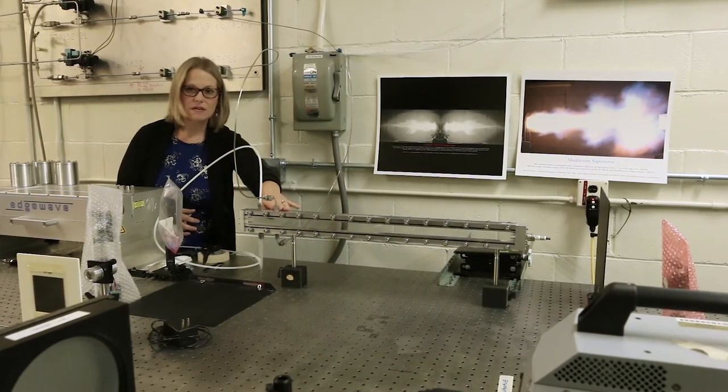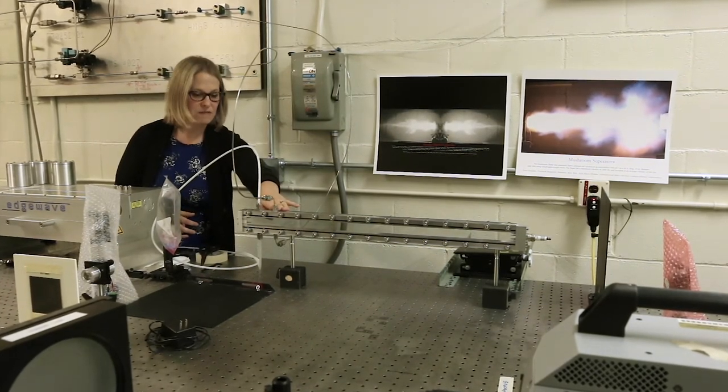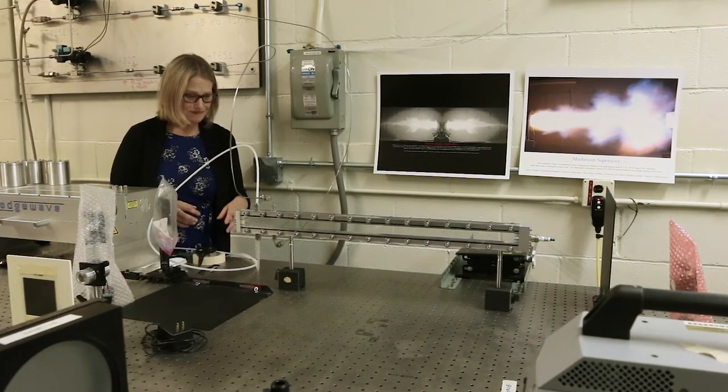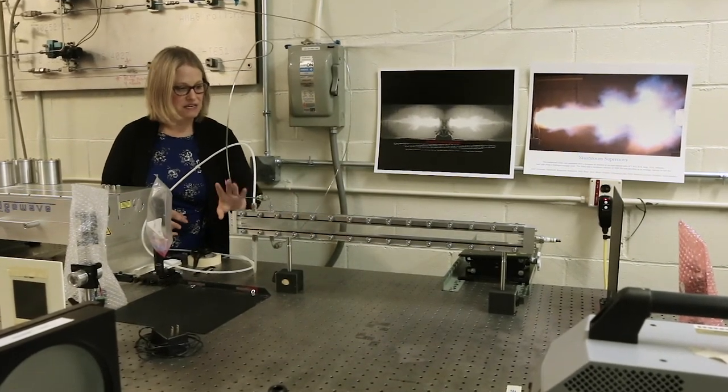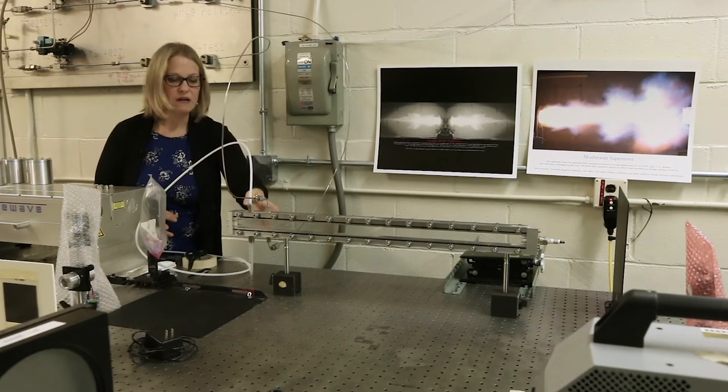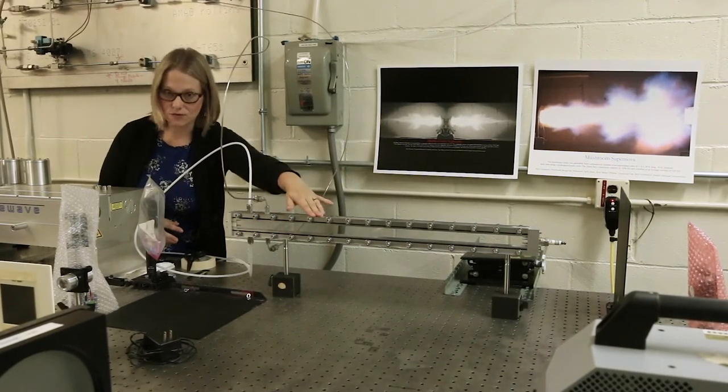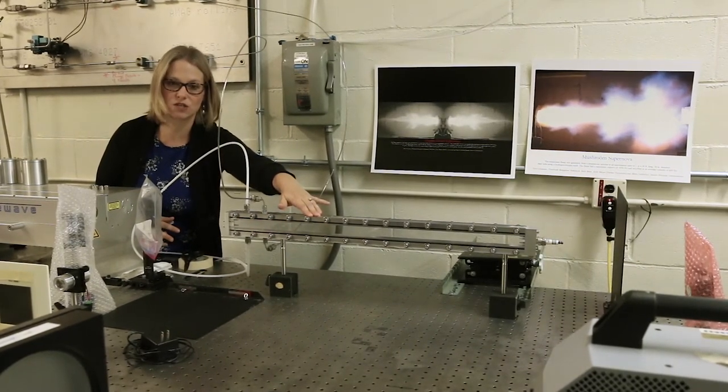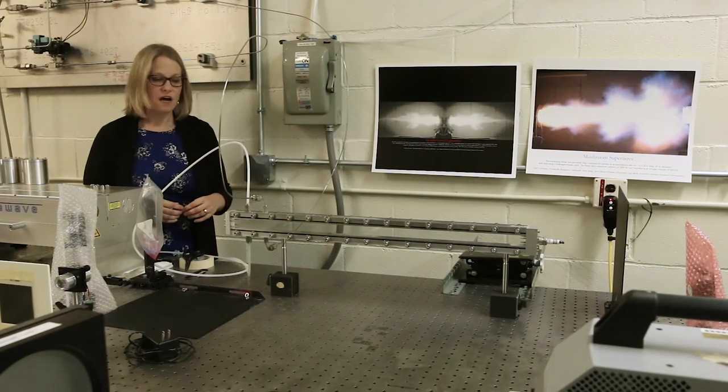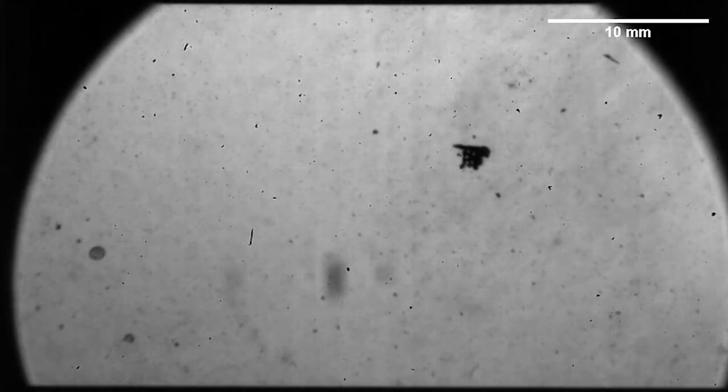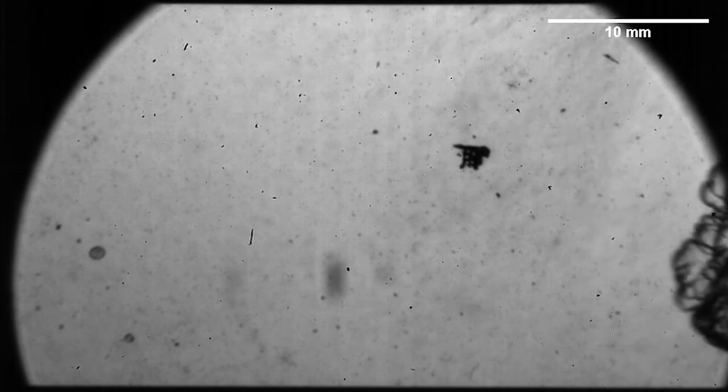This is a detonation tube, a flame acceleration and detonation tube. And you'll see that it's like a small version of our 20-foot tube, but in this case we have windows all along both sides. And so we're able to actually watch the combustion wave as it propagates down the tube and analyze what is causing it to accelerate and in some cases transition to a supersonic detonation wave.